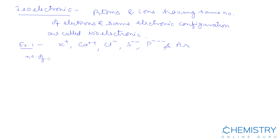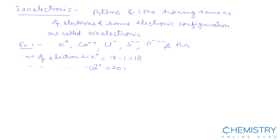Number of electrons in K⁺: atomic number of K is 19, minus 1 due to the 1 positive charge, equals 18. Number of electrons in Ca²⁺: atomic number of Ca is 20, minus 2 due to the 2 positive charge, equals 18.